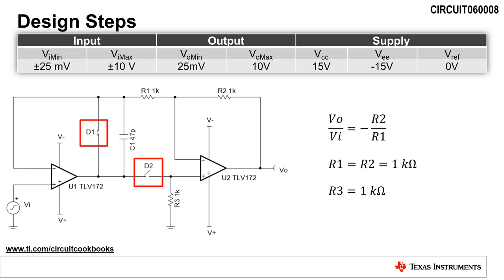Next, we will analyze the circuit for negative input signals. Negative input signals forward bias D1 and reverse bias D2. Therefore, D1 is represented as a short circuit, and D2 is represented as an open circuit.